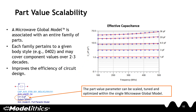A microwave global model is associated with an entire family of parts. Each family pertains to a given body style and may cover component values that span over two to three decades. Using a single microwave global model improves the efficiency of circuit design, as you can control the part value using a single parameter that can be scaled, tuned, or optimized.